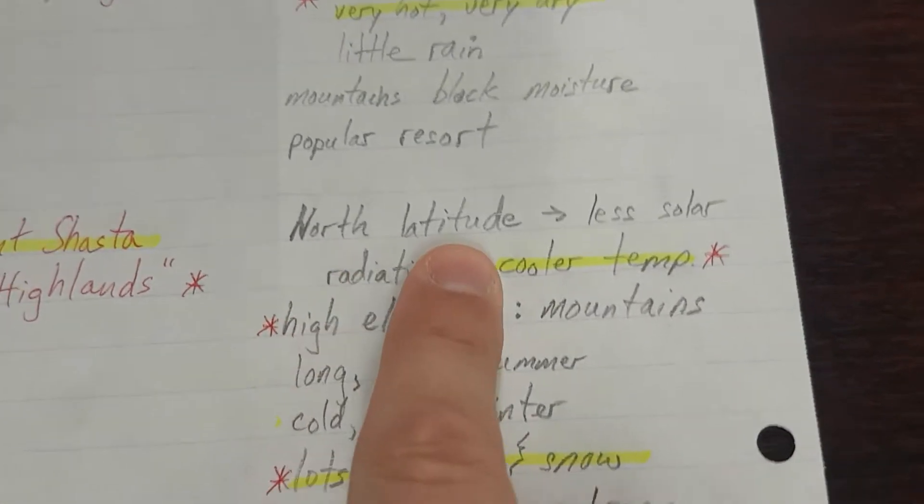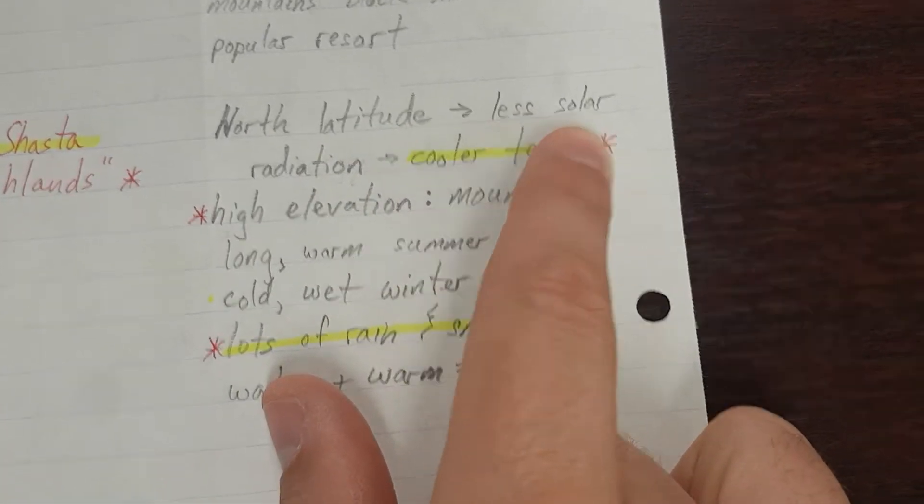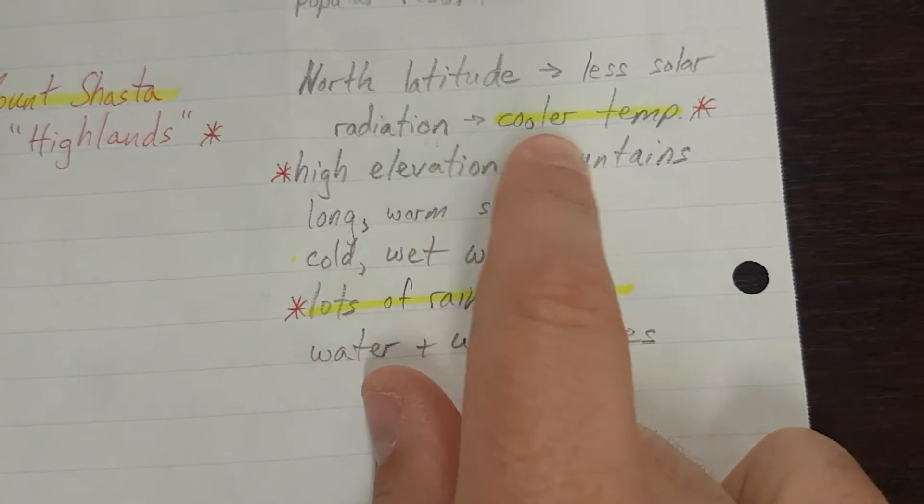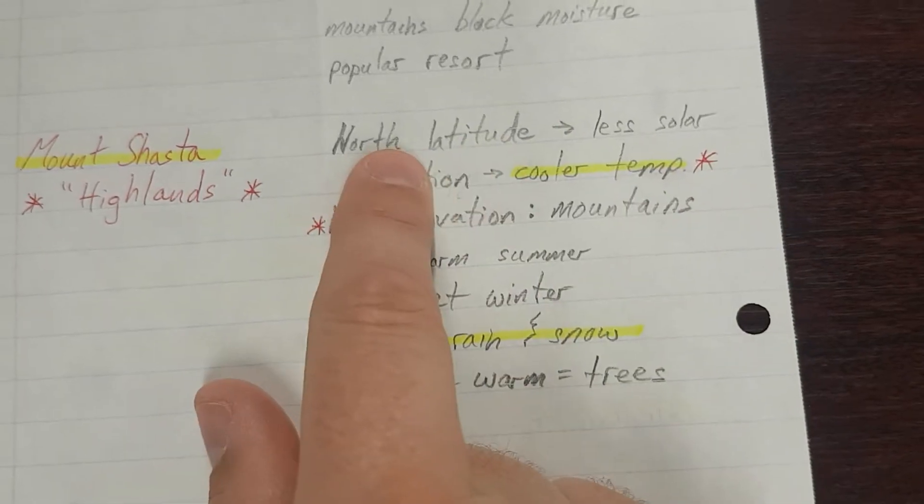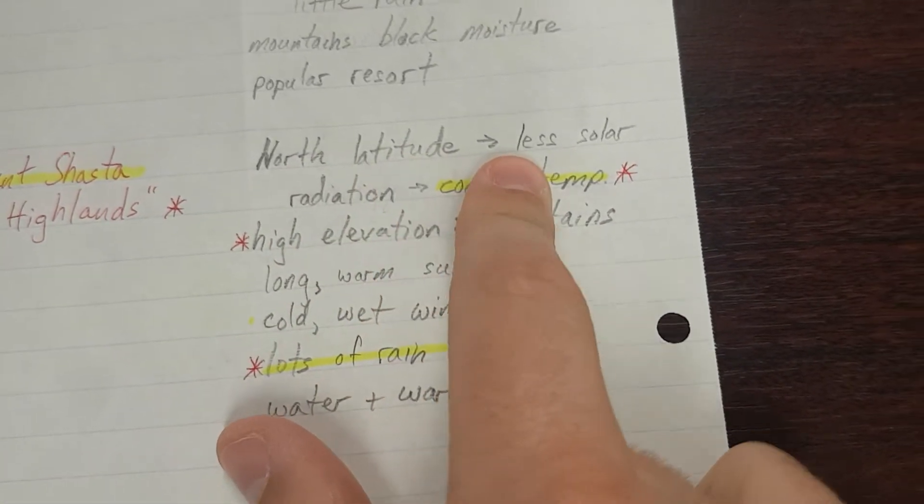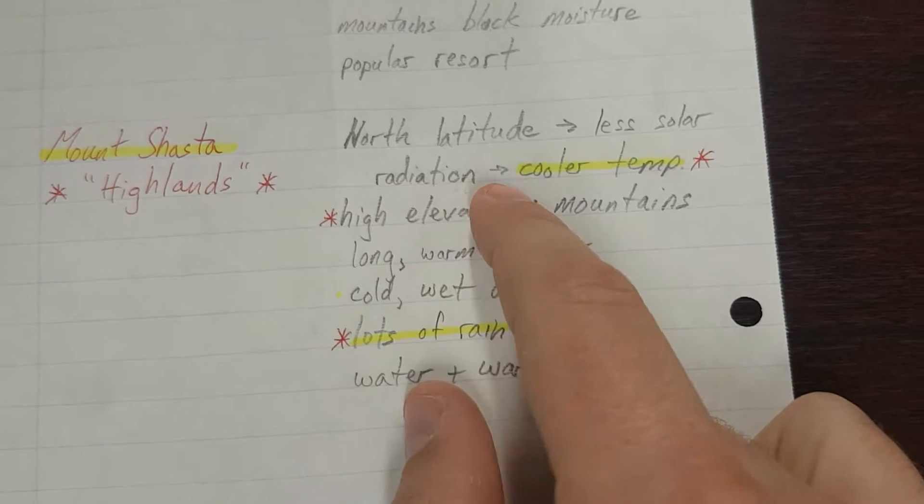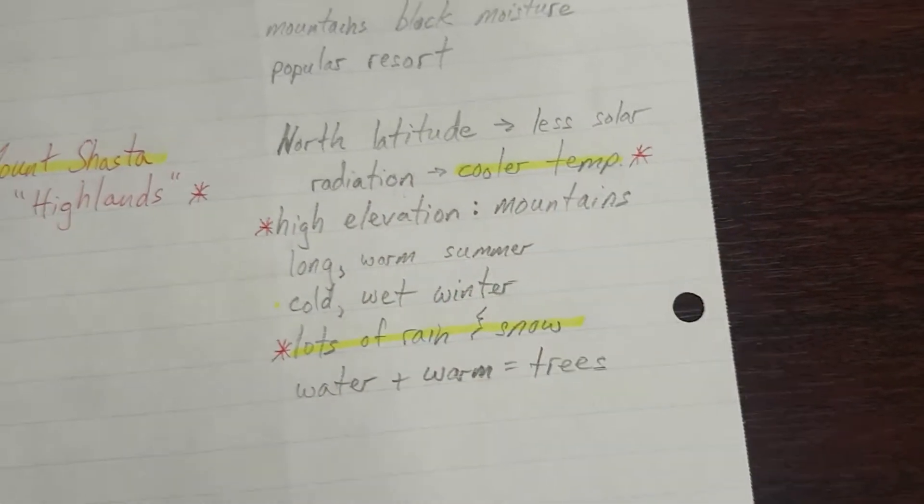North latitude, arrow less solar radiation, arrow cooler temps. So being farther north in latitude means that there is less solar radiation or energy, and that means that it ends up having cooler temperatures.